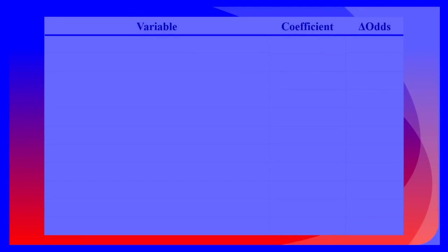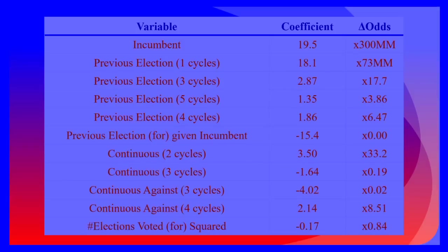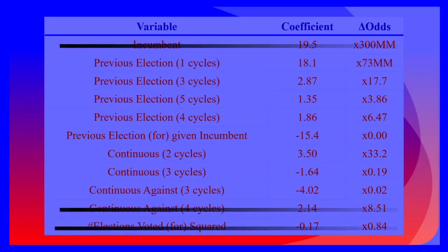The model selected by stepwise regression consists of 11 independent variables. Of these, incumbency has the greatest impact, drastically increasing the likelihood of re-election. However, since President Obama is not eligible for a third term, we can re-calculate the model, removing incumbency-related variables at a slight cost to historical predictive accuracy.